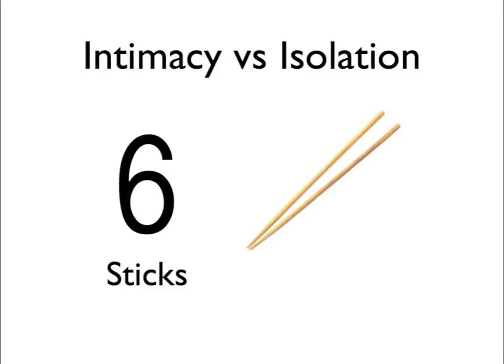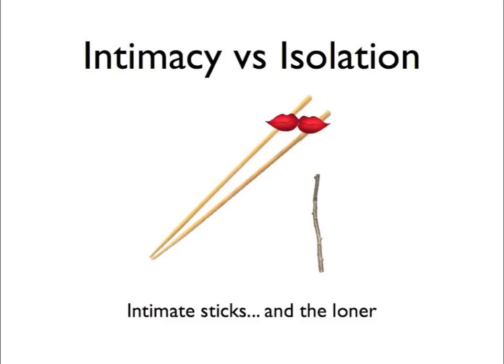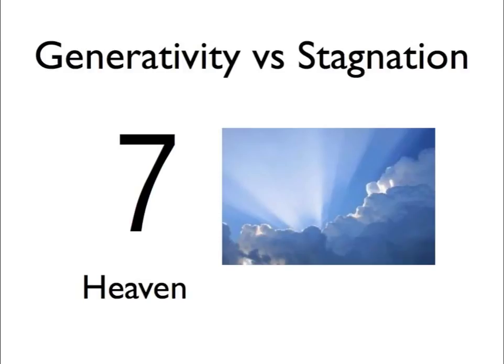Number six is intimacy versus isolation. Six is sticks. This is probably the easiest one. Just picture a couple of sticks kissing and a third stick left off to the side. So six is sticks — we see the sticks and then we see them kissing, representing intimacy versus isolation.